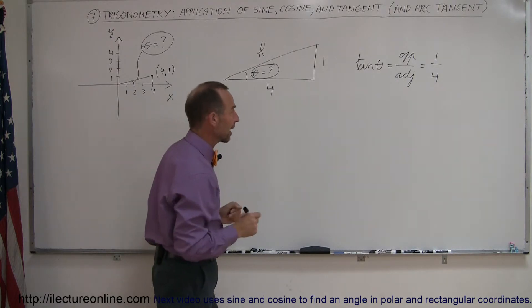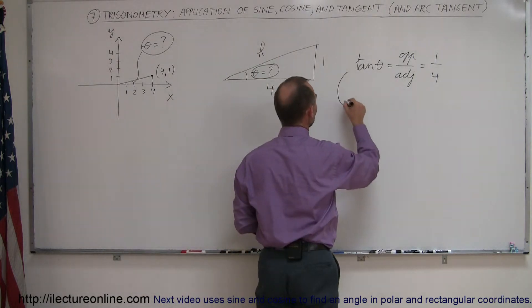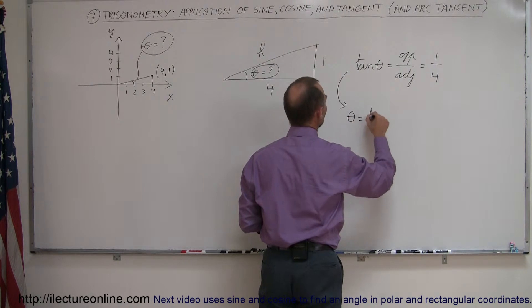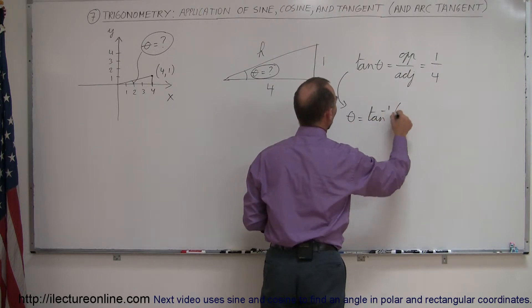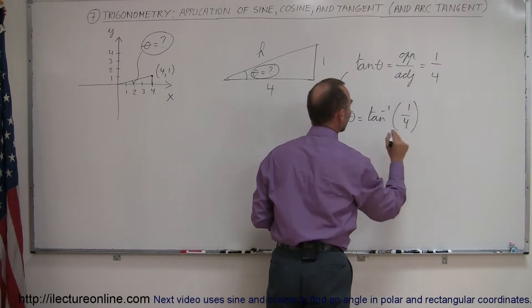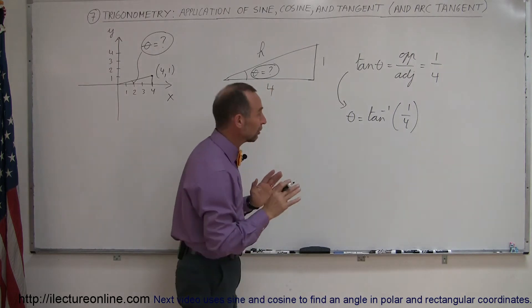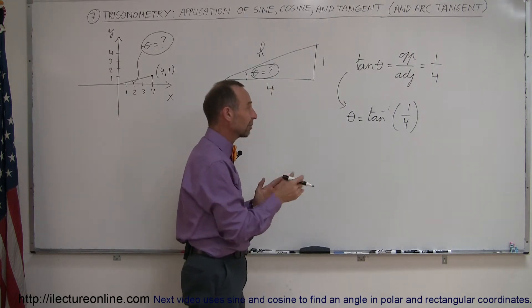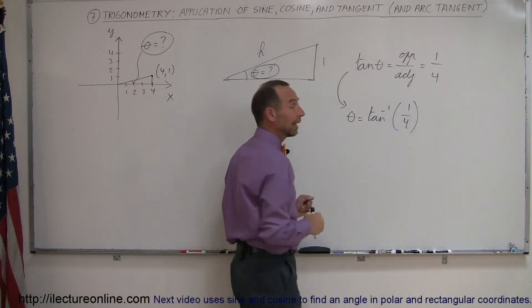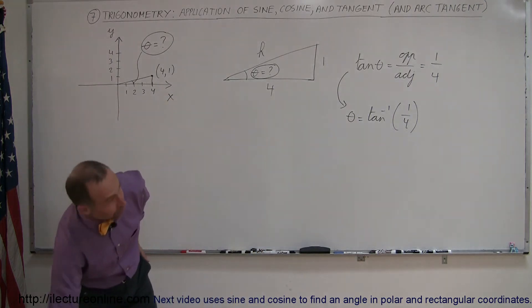You write the arctangent. We can then say that means that theta is equal to the inverse tangent of 1 over 4. At this point, we don't need to know yet what the inverse tangent is, except that it allows us to find the angle. And our calculator helps us do that.